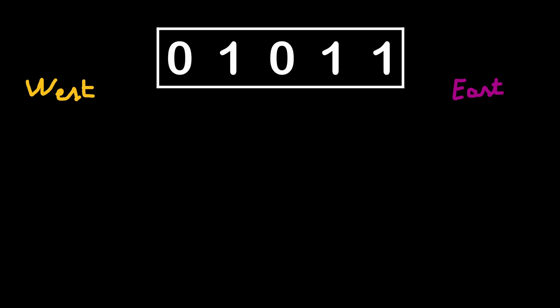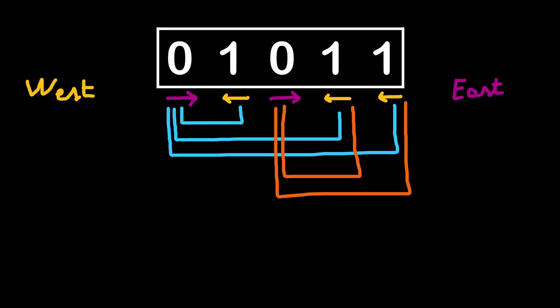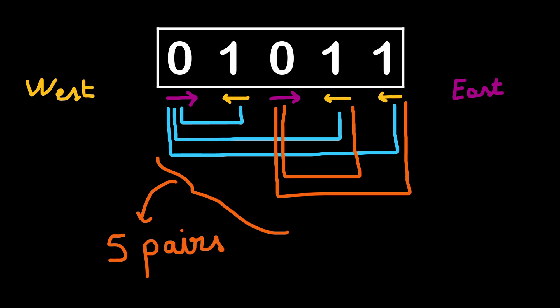We are given an array of numbers 0 and 1, and these numbers represent cars going in two different directions. 0 represents cars going east and 1 represents cars going west. We have to count the number of crossing cars. For example, these two elements are the first crossing couple, then another crossing couple, a third, a fourth, a fifth, and in total we have five pairs of crossing cars. We need to create an algorithm to find this number in the most efficient way.